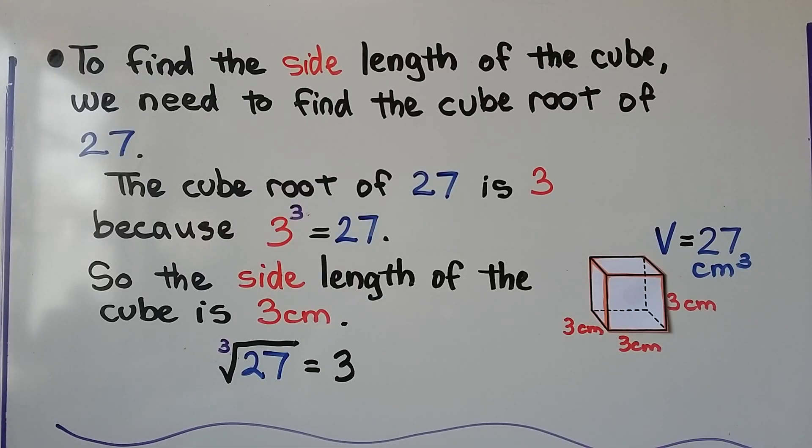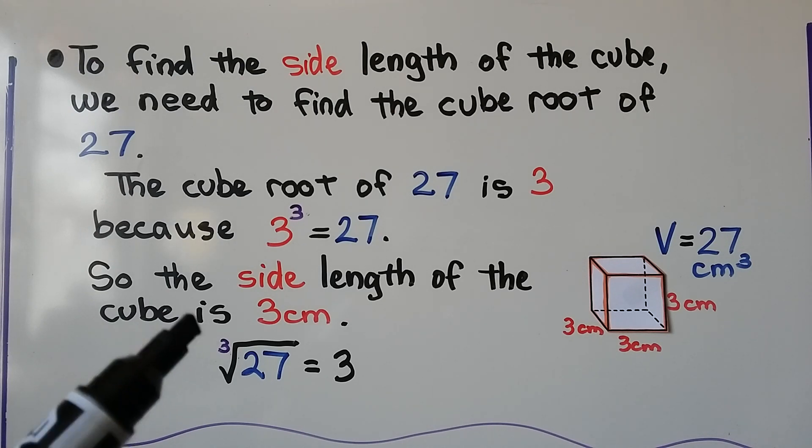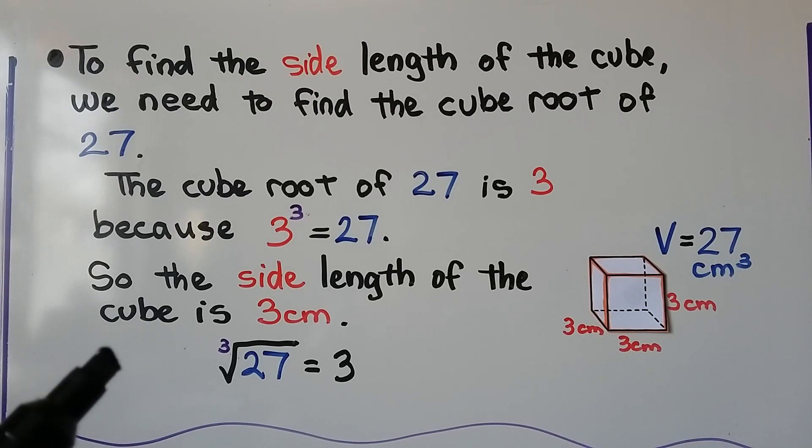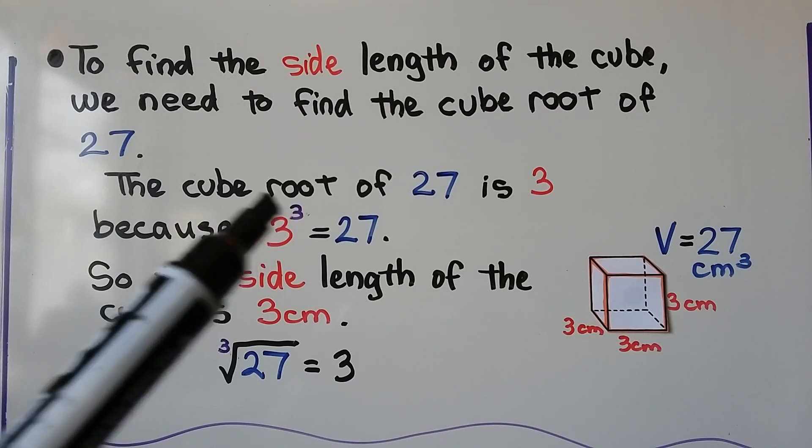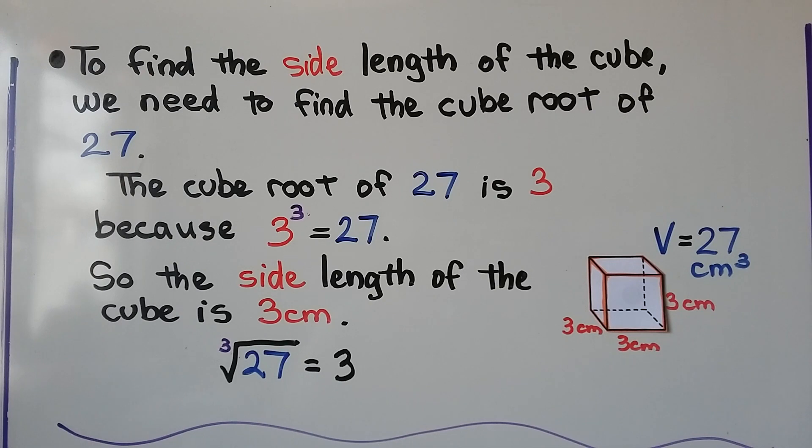To find the side length of a cube, we need to find the cube root of 27. If it's giving us the volume is 27, the cube root of 27 is 3, because 3 cubed is equal to 27. So the side length of this cube is 3 centimeters. We have a little index 3 here, it's the cube root of 27, which equals 3.